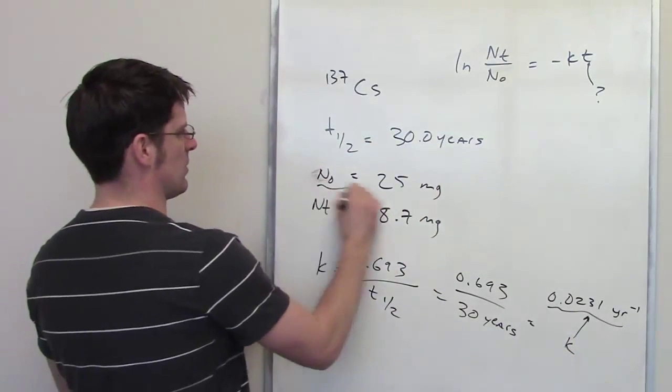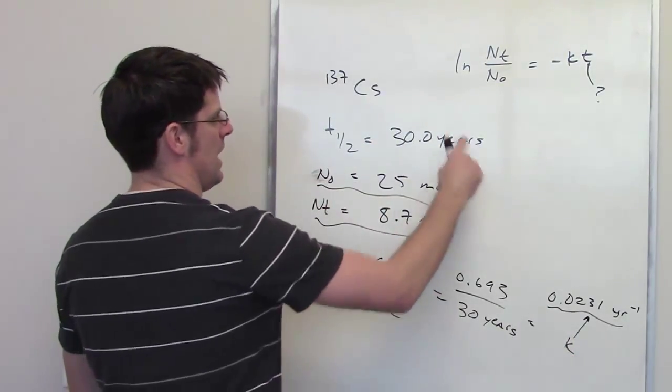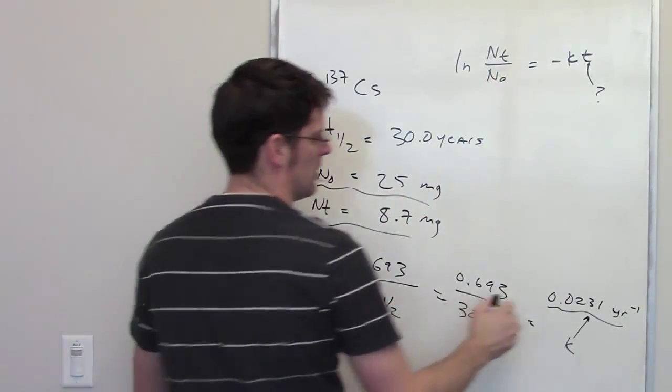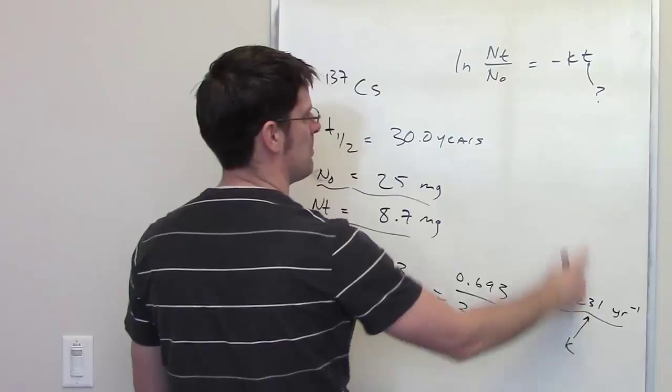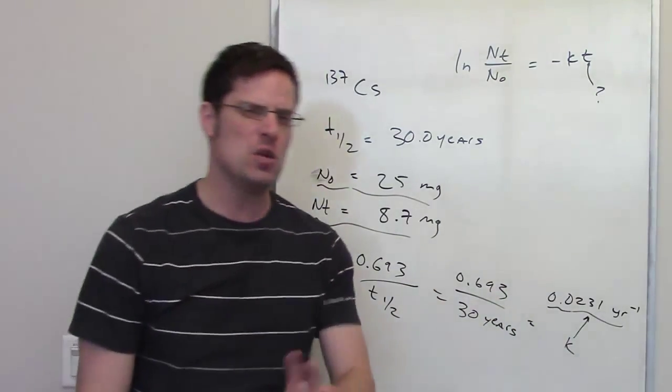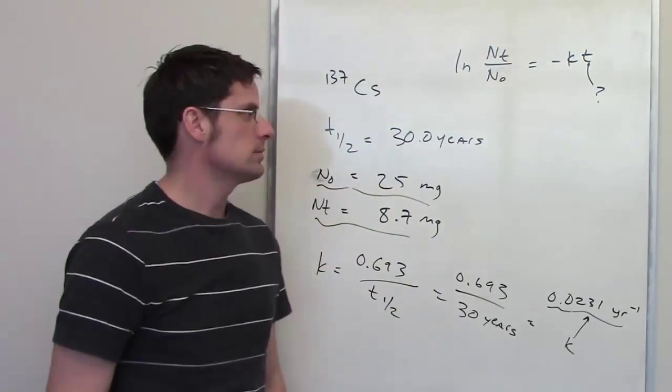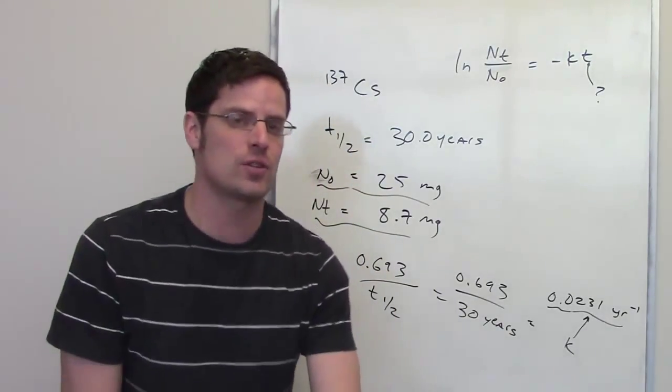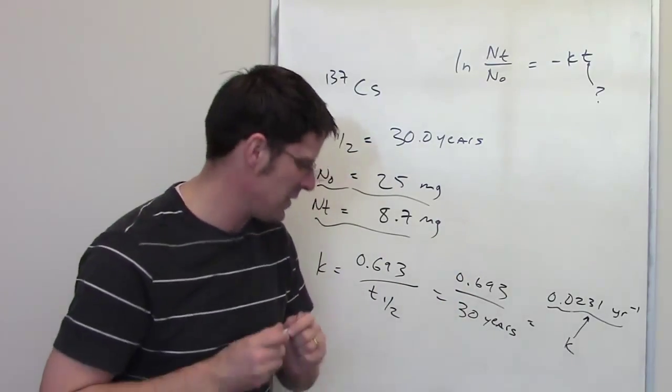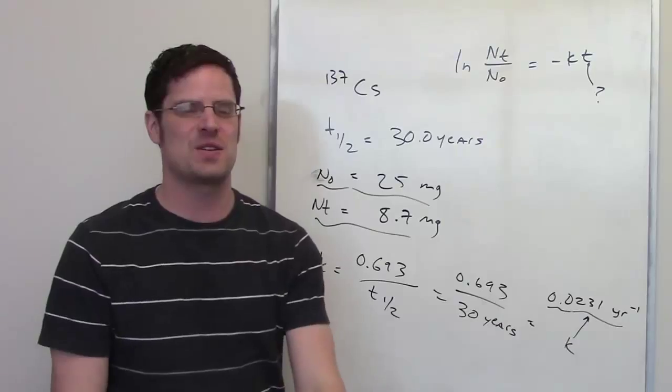I've got n sub 0 right here, I've got n sub t, I can plug these numbers right in to their relative positions, I can take this value for k, plug it right into there, and solve for t. When you do that, unit-wise, you should end up getting t in years, and that really is the final answer. So once you have these values, it's pretty much just a plug-and-chug problem. So I'll let you go ahead and do that on your own.